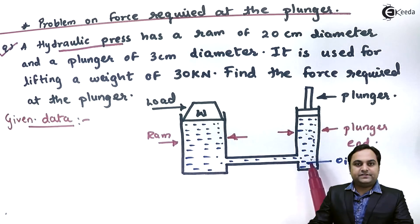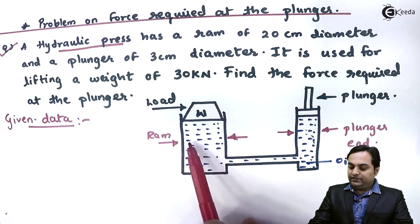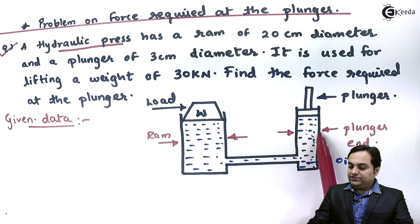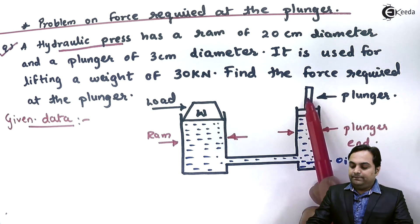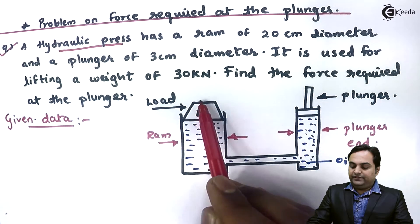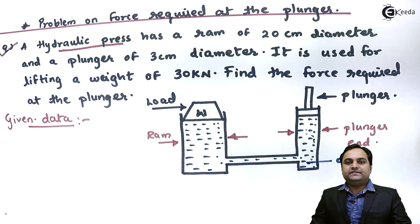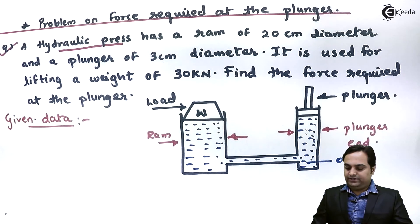For this question, since it is a hydraulic press, I have drawn the diagram. It consists of a RAM which is the bigger diameter end and a plunger end which is the smaller diameter end. At the plunger we apply the force, and at the RAM end the load would be lifted. Basically, a hydraulic press is a machine used to lift heavy loads by applying less effort.